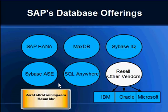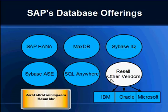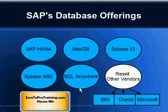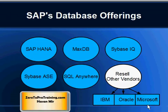Keep in mind that SAP AG offers more than one database. SAP HANA is one of many — others include MaxDB, Sybase IQ, Sybase ASE, and SQL Anywhere. On top of that, SAP can also resell other vendors' databases such as DB2 from IBM, Oracle Database from Oracle Corporation, and SQL Server from Microsoft Corporation.